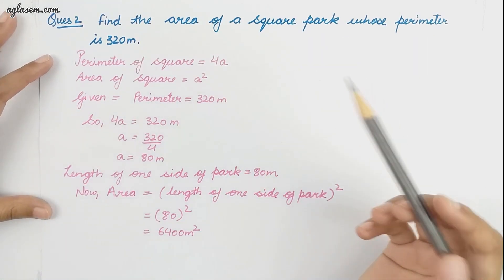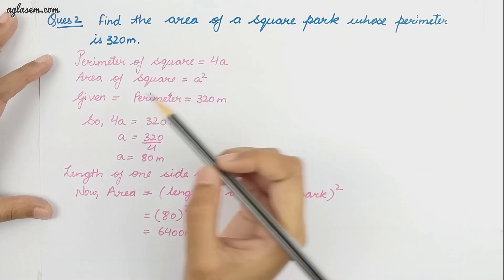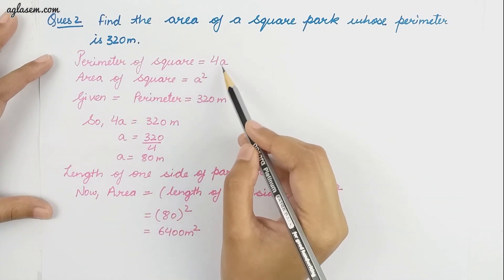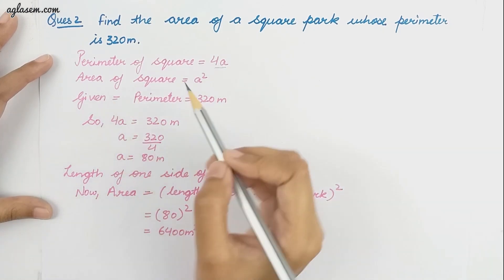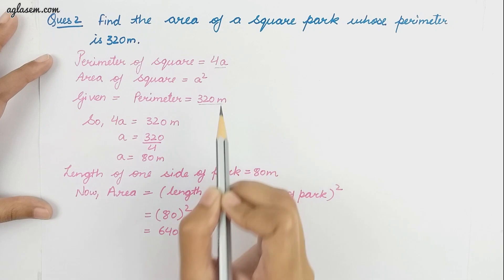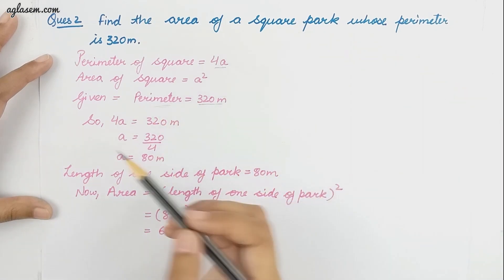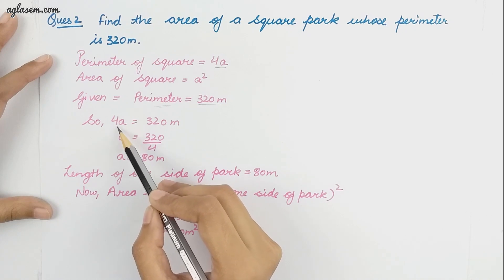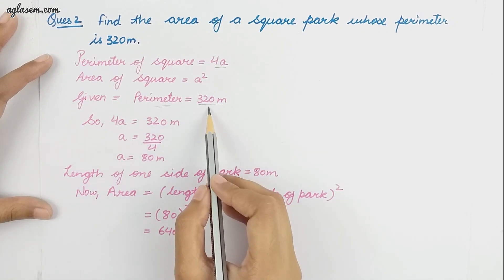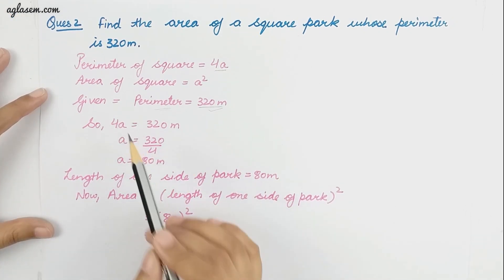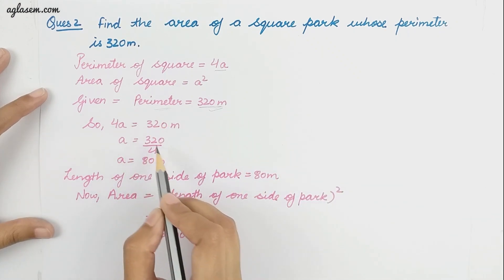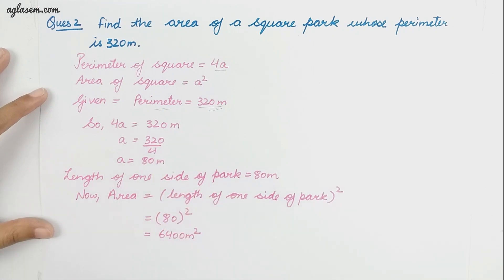Our next question: find the area of a square park whose perimeter is 320 meter. The perimeter of a square is 4 into a, and the area of a square is a squared. The given perimeter is 320 meter, so 4a equals 320, which gives a equals 320 divided by 4, that is 80 meter.